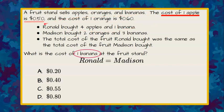We know that one apple is 50 cents and one orange is 60 cents. So we can say that Ronald bought four apples, so four times 50 cents plus a banana.